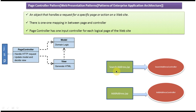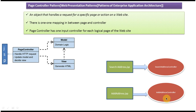Suppose we have two JSP pages: a Search Address JSP page, which searches for an address in the system and displays it, and an Add Address JSP page, where a user enters address information to add it to the database. These two pages each do different functionality. As per the Page Controller design pattern, we need to write one controller for handling the Search Address JSP request and one controller for handling the Add Address JSP request.